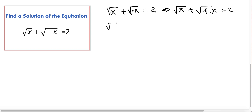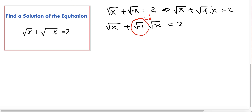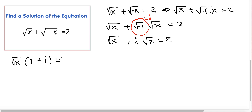Now we can decompose this square root. We can write square root of minus 1 times square root of x, and square root of minus 1 is equal to i — a pure imaginary number. So we have square root of x plus i times square root of x equals 2. We can factor out square root of x as the greatest common factor, giving us square root of x times (1 + i) equals 2.